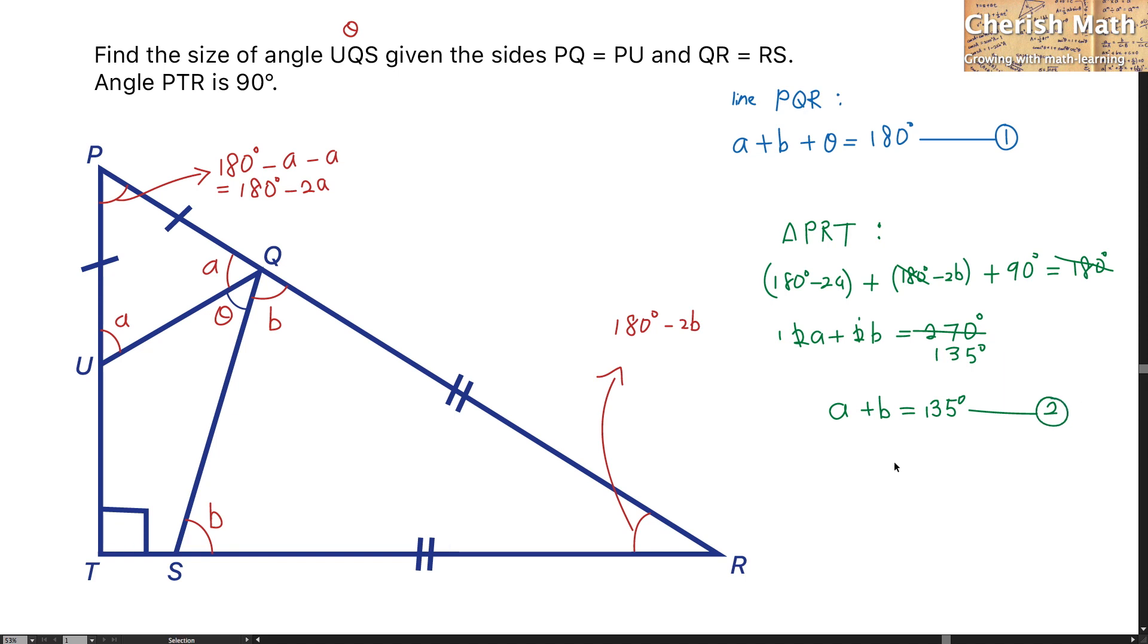Now here comes the last step in solving the problem by substituting equation 2 into equation 1, and we are going to get 135 degrees as substituted into A plus B plus theta equals 180 degrees.